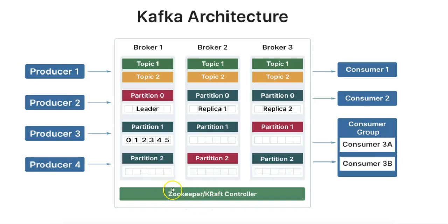Now we have ZooKeeper, which is deprecated in Kafka 2.8.0 and later. Historically, Kafka used Apache ZooKeeper for distributed coordination, such as managing broker metadata, electing the leader, and configuration settings. But Kafka is now transitioning to KRaft — the Kafka Raft Controller protocol — to eliminate the need for ZooKeeper, starting with Kafka 2.8.0, which makes Kafka self-sufficient in managing its metadata and leader elections.